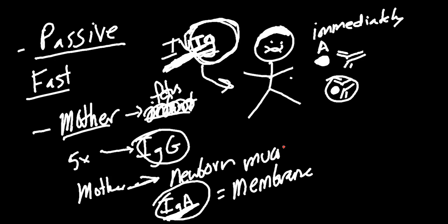IgA crosses through the colostrum and coats the mucosal membranes — the newborn takes in the breast milk and it coats the gut and colon. When you hear IgA, think mucosal membranes. In all these passive immunity examples, someone else — the lab, another animal, another human, or the mother — is making the immunoglobulin, and the recipient is passively receiving it. They are not making it for themselves.